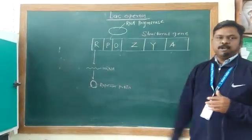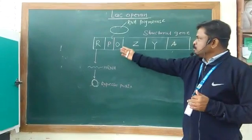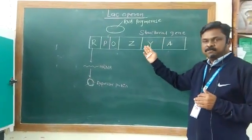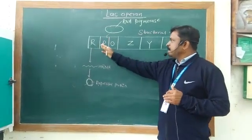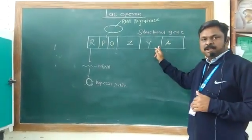According to Jacob and Monod, the E. coli bacteria shows DNA, and on this DNA you will get polycystronic genes. The genes are regulator, promoter, operator, and the structural genes.